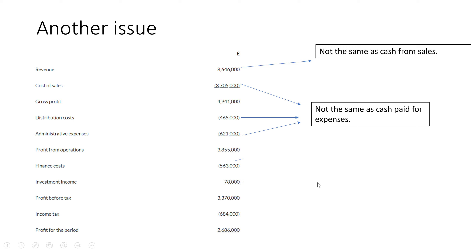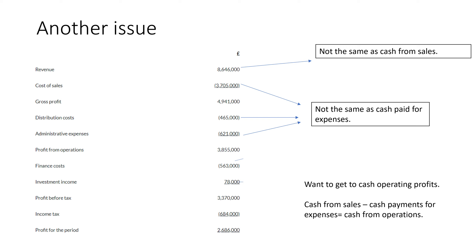We need to understand how to adjust for these. The idea is to get to operating profits in cash terms, which we do by calculating cash from sales and taking away cash payments for expenses — essentially having everything in cash terms.